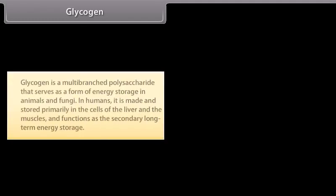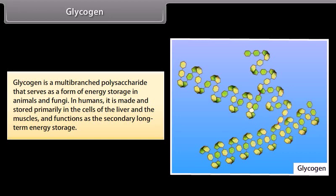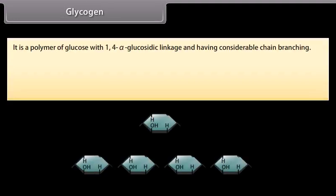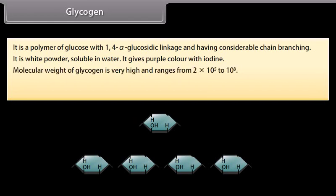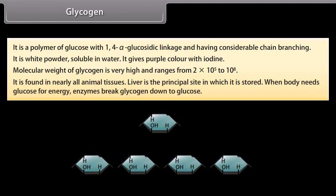Glycogen is a multi-branched polysaccharide that serves as a form of energy storage in animals and fungi. In humans, it is made and stored primarily in the liver and muscle cells and functions as secondary long-term energy storage. It is a polymer of glucose with 1,4 alpha-glucosidic linkage and considerable chain branching. It is a white powder soluble in water and gives a purple color with iodine. Its molecular weight ranges from 2×10⁵ to 10⁸. It is found in nearly all animal tissues; when the body needs glucose for energy, enzymes break glycogen down to glucose.